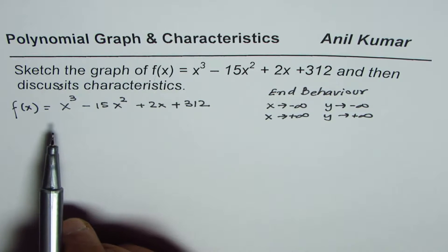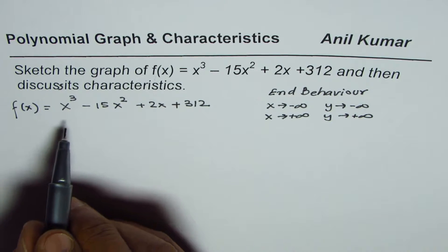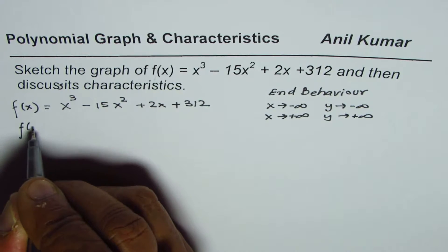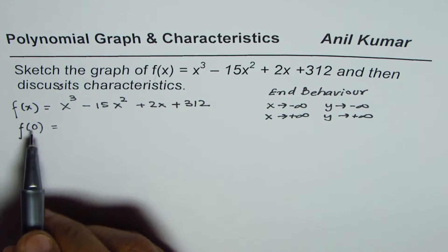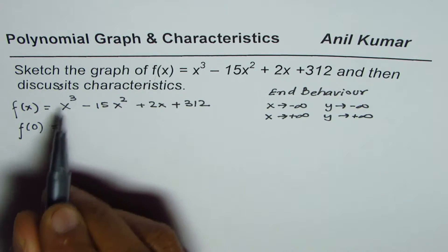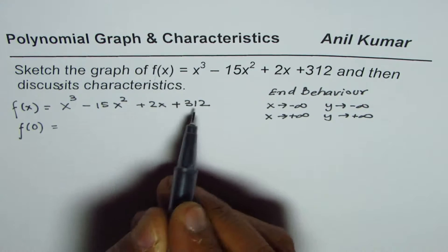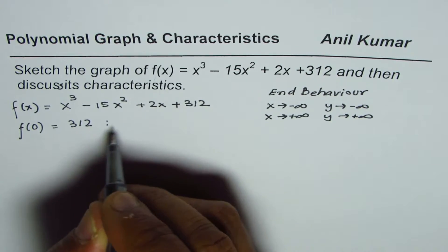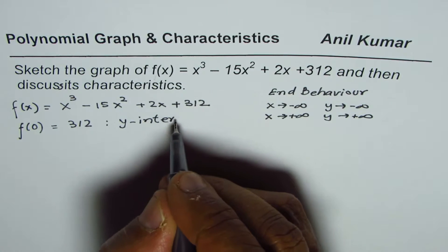Now important things which we need to find here is x and y intercepts. Now y intercept is kind of simple, y intercept is the value of the function when x is 0. So if you substitute 0 here, this term will be 0, this will be 0, this will be 0, you get 312. So that is the y intercept.